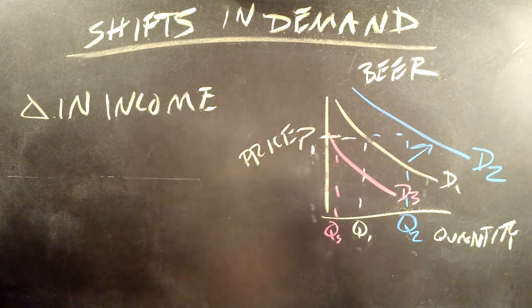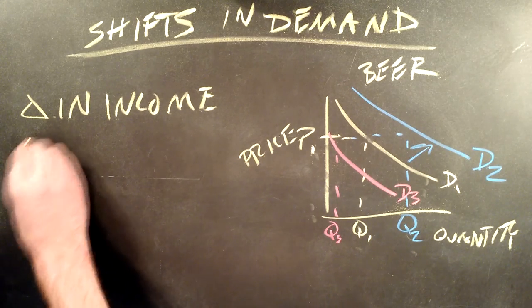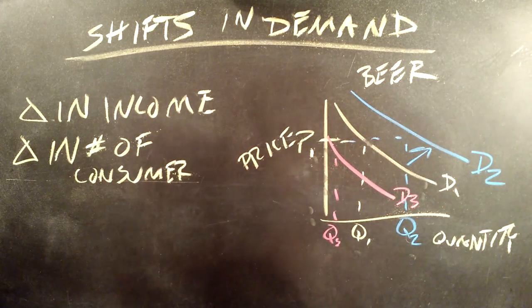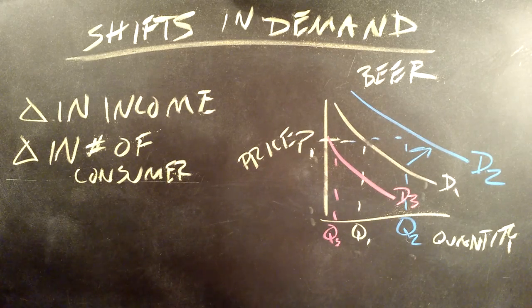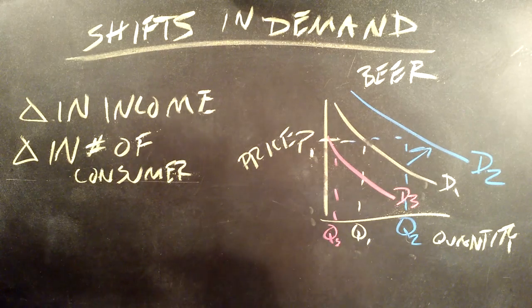The second thing that can change a demand curve is a change in the number of consumers. So if we think of the market for beer, say D1 is only individuals who are 21 years or older are able to buy alcohol and consume it.